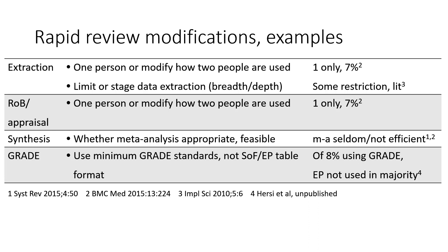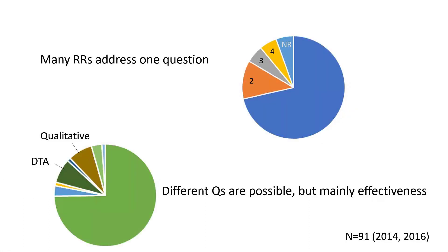One approach is a verification process where you check the first person's work for some or all of the studies — that would be one way to involve a second person. Very few rapid reviews include meta-analyses, so it's not always used. When looking at GRADE, one methods study found that of the 8% of rapid reviews that did use GRADE, the evidence profile was not used in the majority of them. Typically multiple questions are not undertaken in a rapid review, with the thinking that you need to focus on the key item of interest for requesters to meet the timeline.